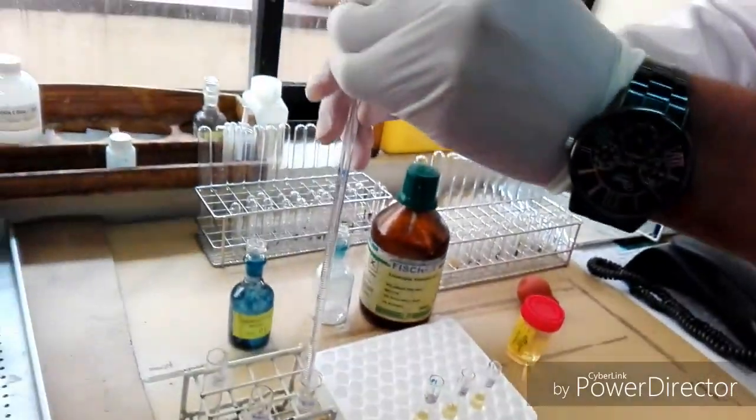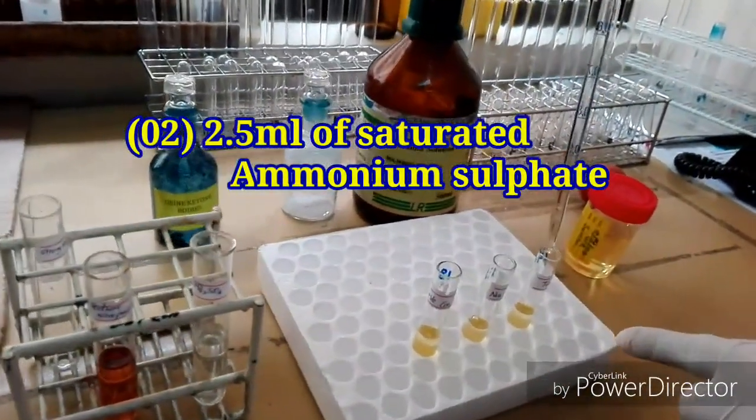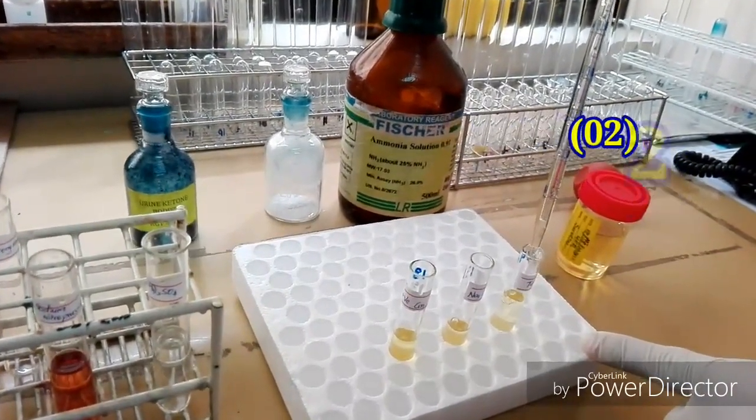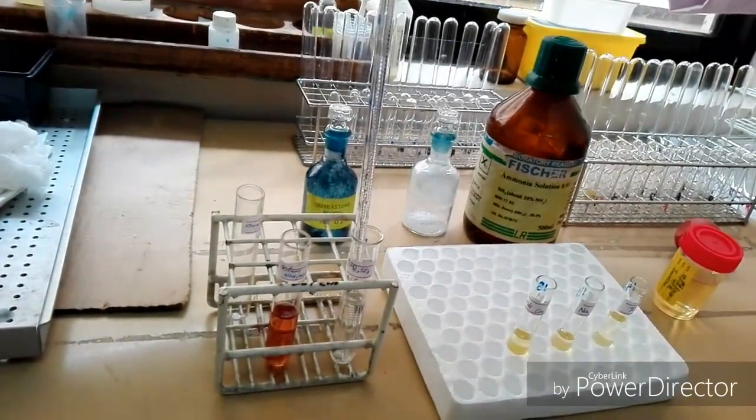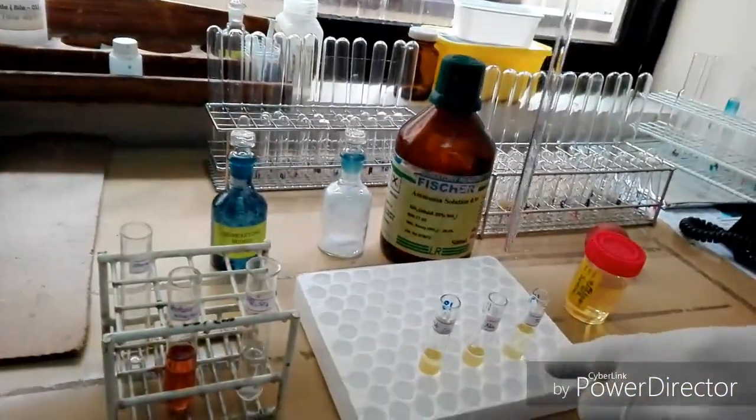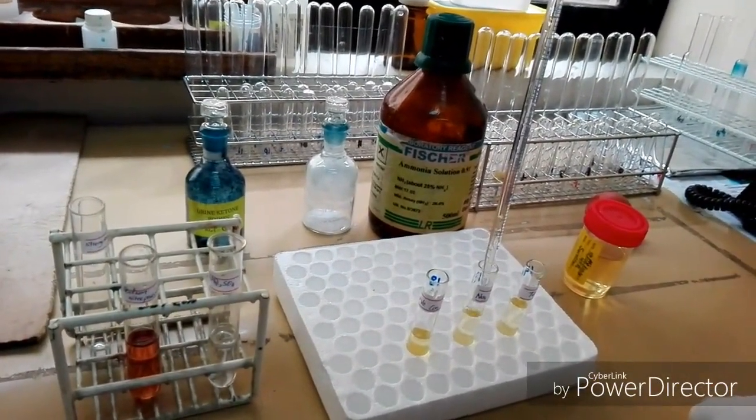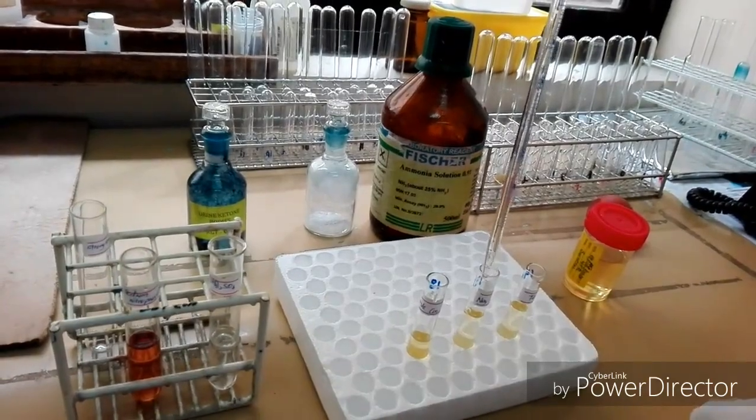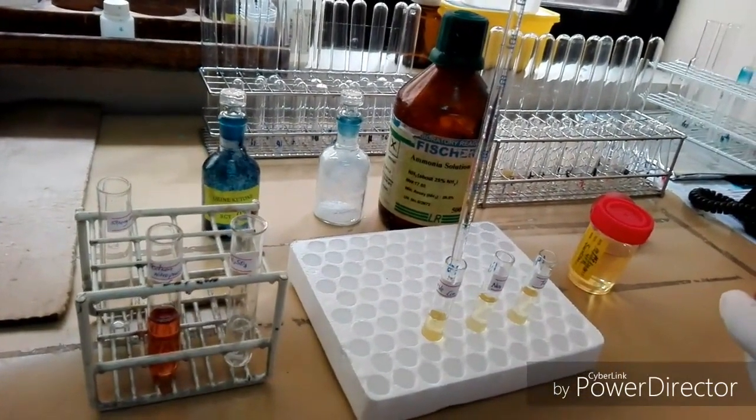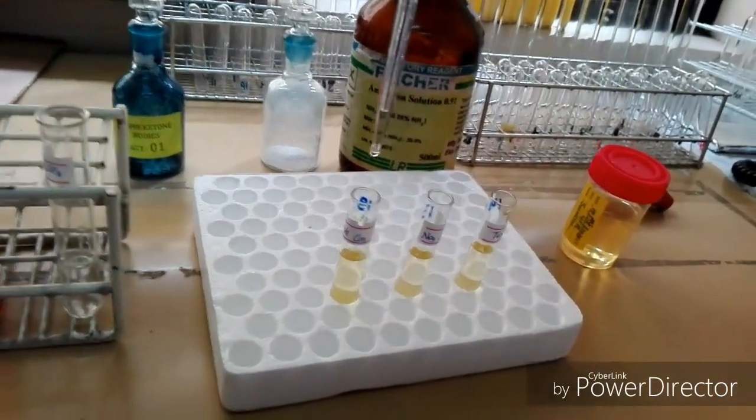Then we add 2.5 ml of saturated ammonium sulfate into each test tube. Now let's add 2.5 ml of saturated ammonium sulfate to the test, then to the negative control, and finally to the positive control. Okay, now we have added 2.5 ml of saturated ammonium sulfate into each labeled test tube.